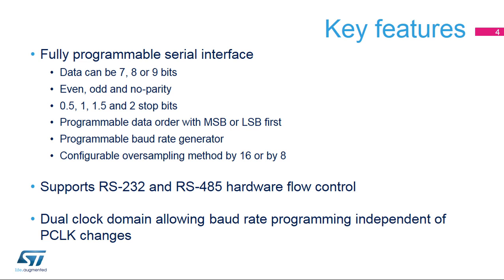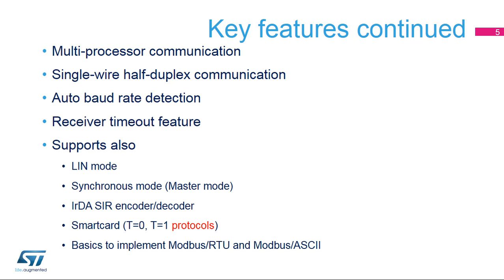The USART supports a dual-clock domain, allowing baud rate programming independent of the peripheral clock or PCLK. This also allows the peripheral clock to be throttled along with the core clock without disrupting communications. The USART features a multi-processor mode, which allows the USART to remain idle when it is not addressed. In addition to full duplex communication, single-wire half-duplex mode is also supported. The USART also offers many other features including auto-baud rate detection, receiver timeout, and supports several modes which will be described later.